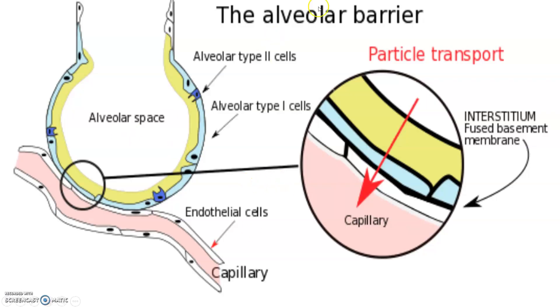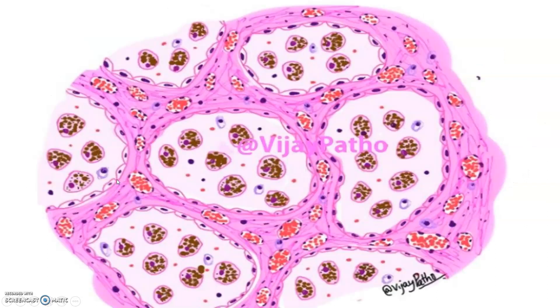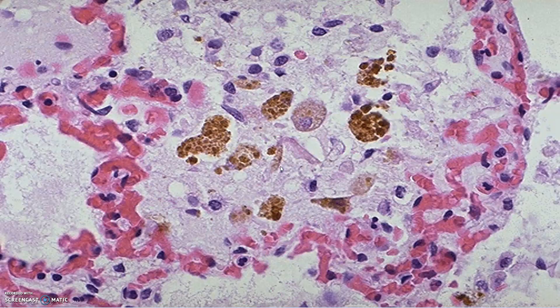This is actually the alveolar barrier. You can see the alveolar type 2 cells and alveolar type 1 cells. This is the capillary and this is the endothelium. Whenever the capillary pressure increases, the endothelial gap widens and through this gap the RBC comes inside. These are the heart failure cells — you can see the heart failure cells here. Thank you.